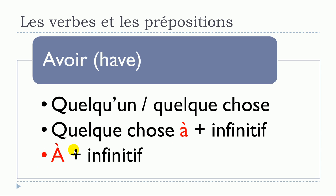Or just avoir à plus infinitif. So here are the three structures we can make with avoir: avoir quelqu'un, avoir quelque chose, avoir quelque chose à plus infinitif, and avoir à plus infinitif.